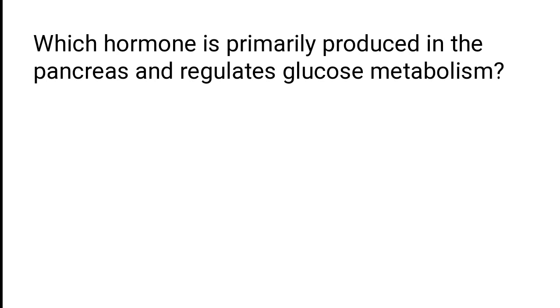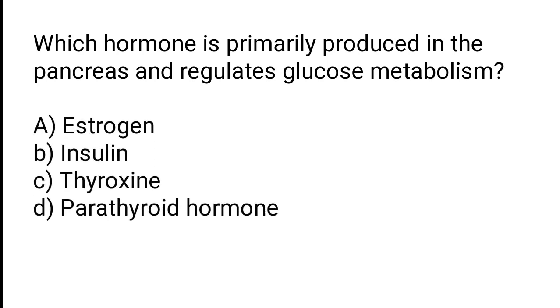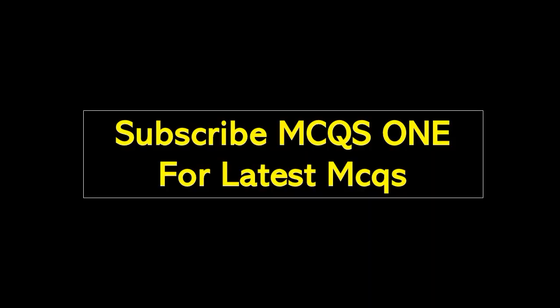Which hormone is primarily produced in the pancreas and regulates glucose metabolism? Estrogen, insulin, thyroxine, parathyroid hormone. The correct answer is option B: insulin. Thanks for watching — subscribe to MCQs One for the latest MCQs.